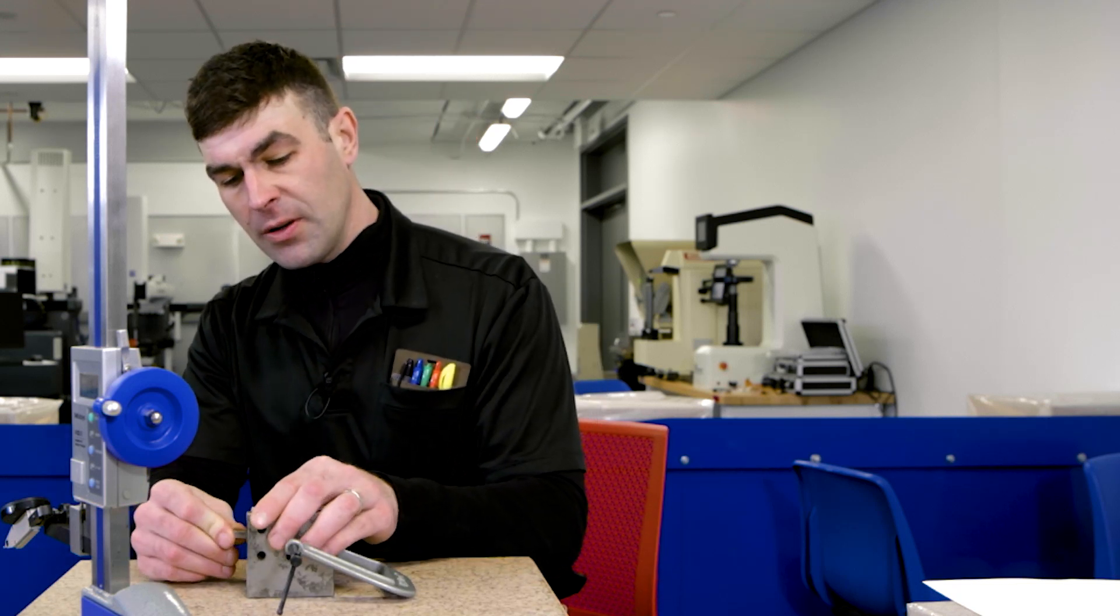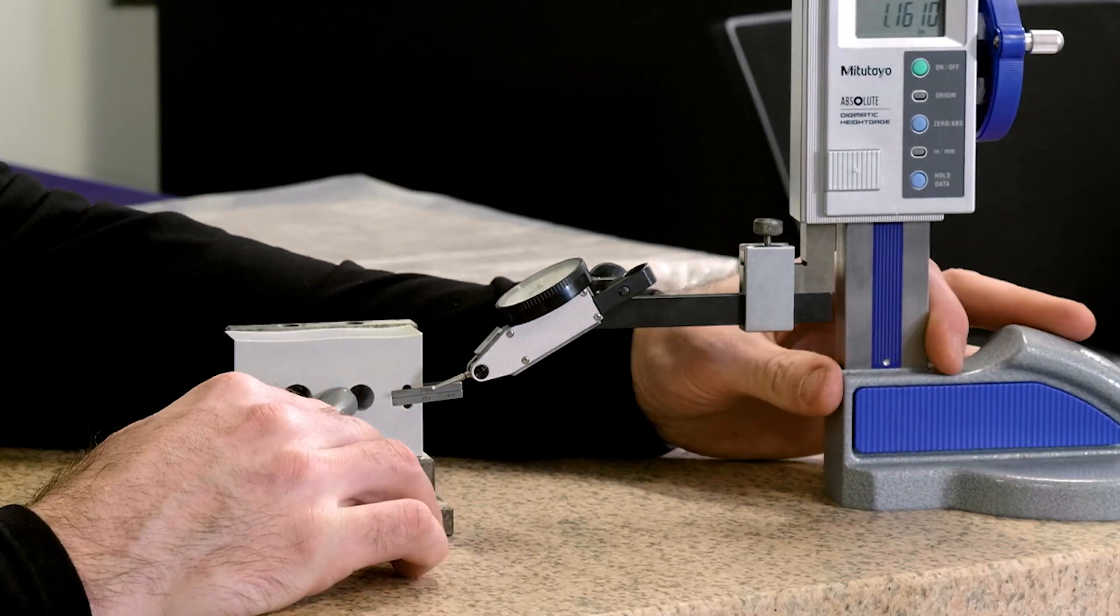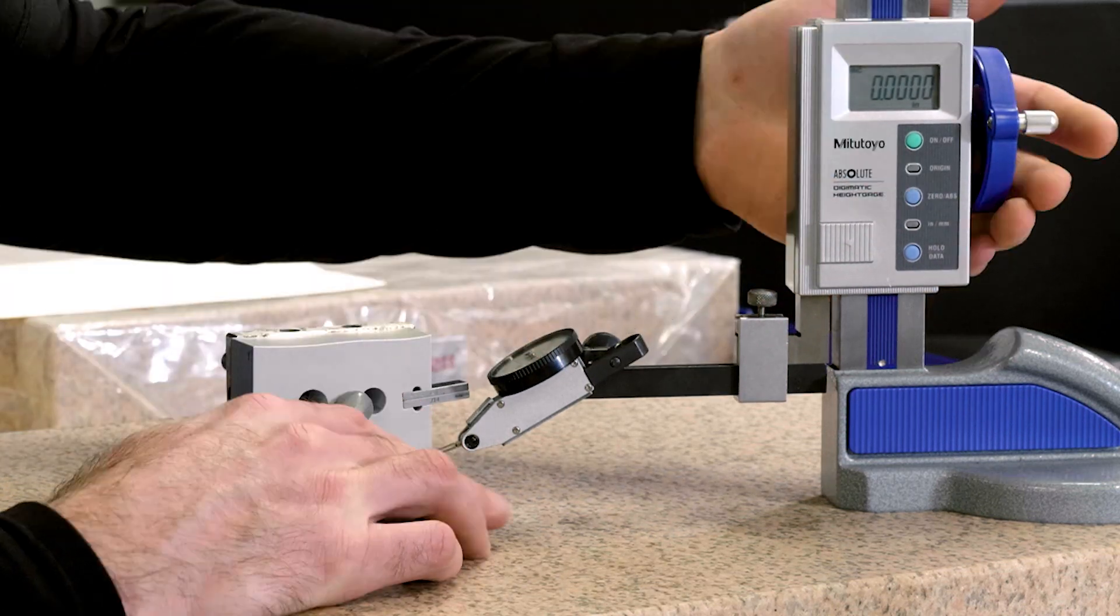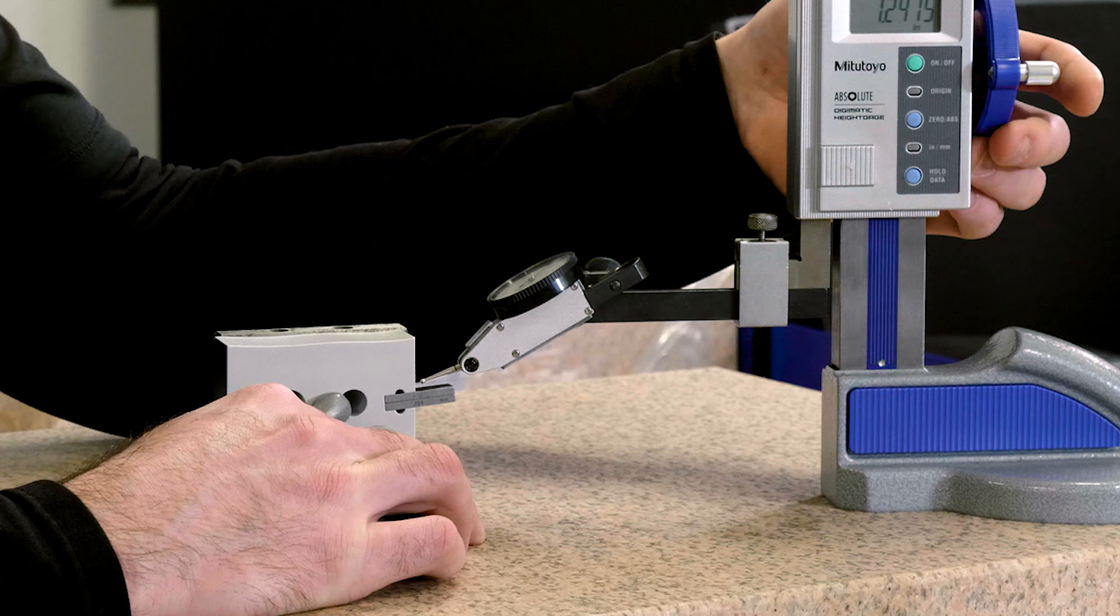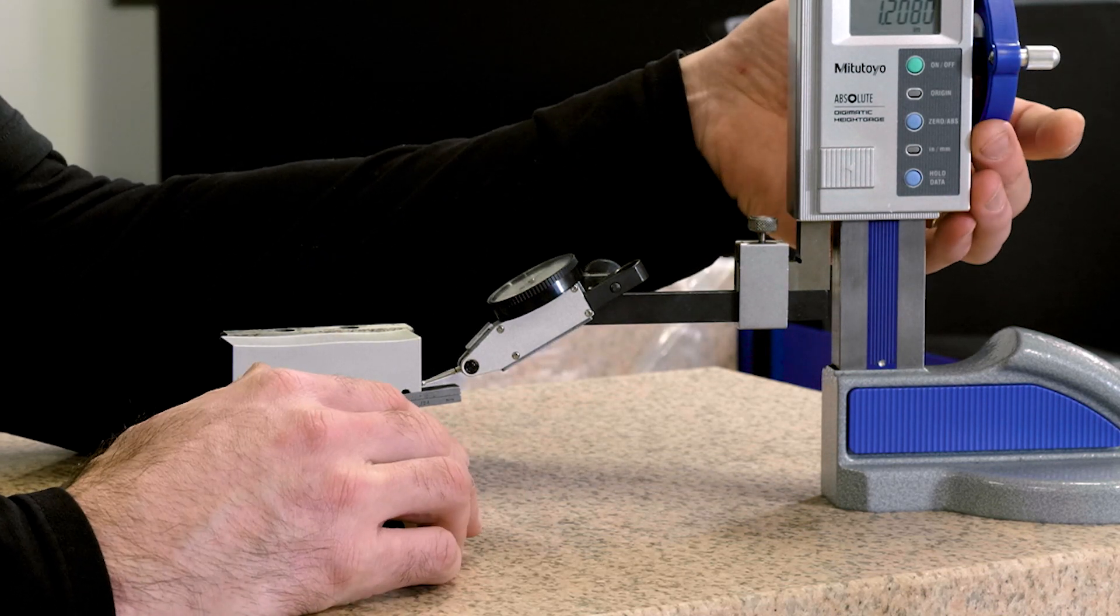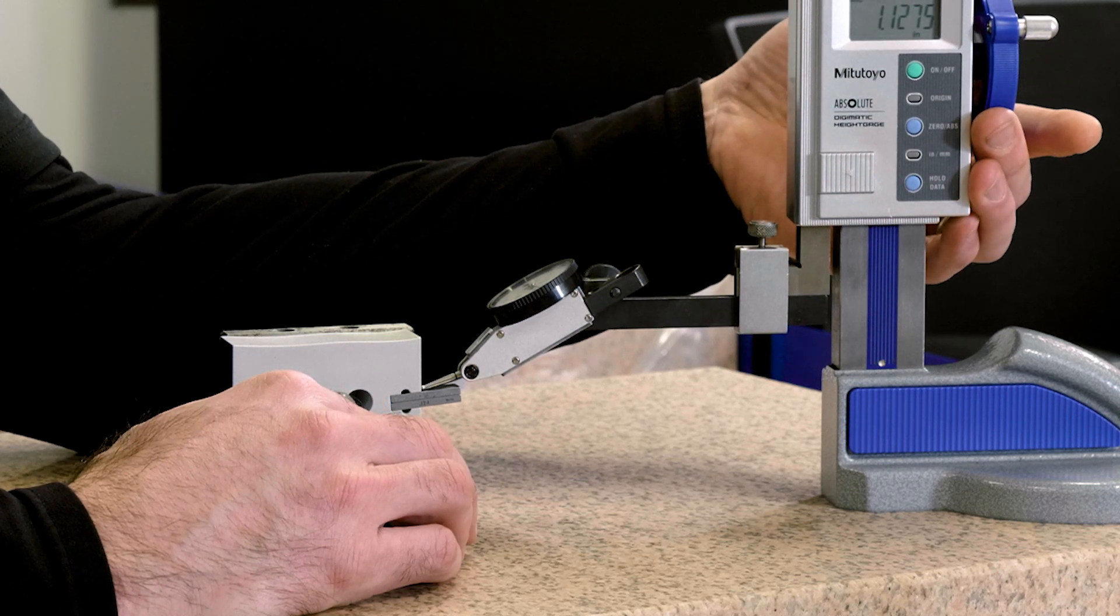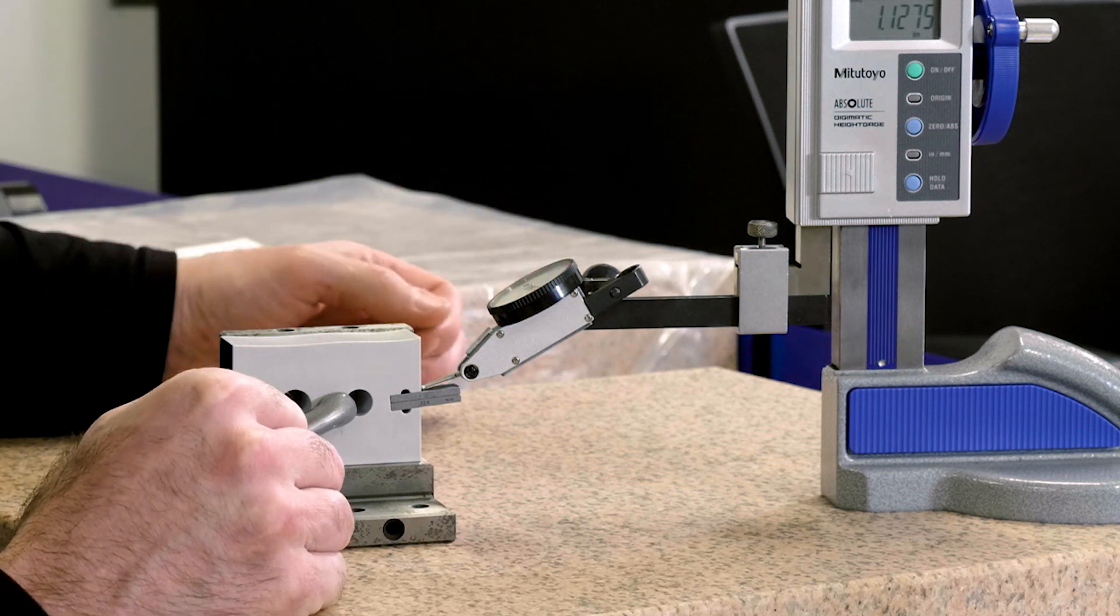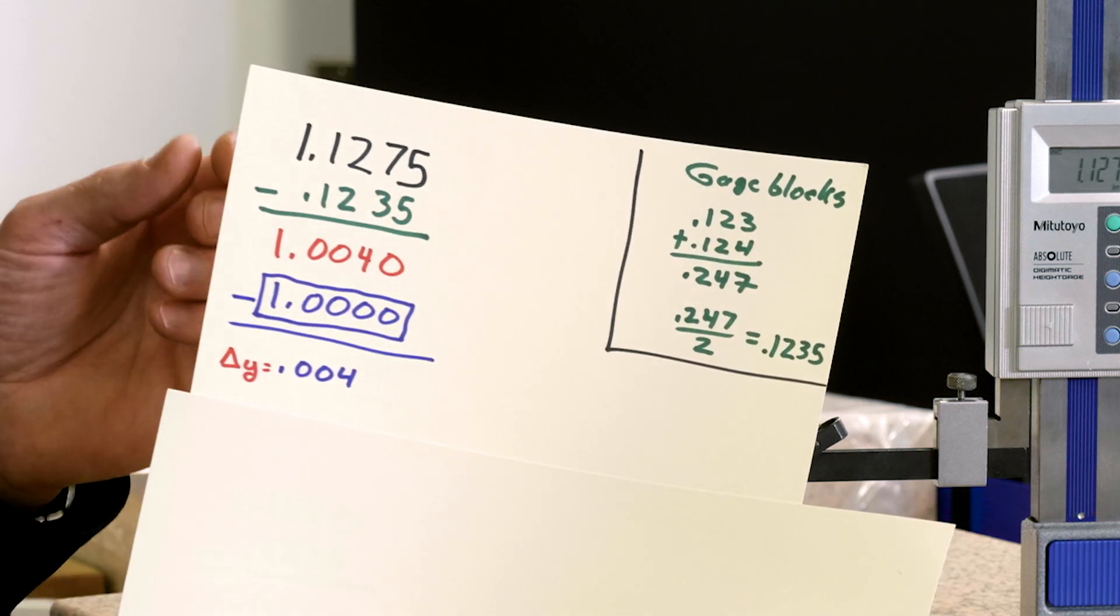I'm going to start here. Let's zero our indicator right here on the datum B, what I would call a shelf. So we're zeroed on our datum B simulator. We're going to come in as close to the part as we can and take our first measurement on that gauge block. Now our height gauge reads 1.1275.